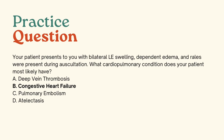C — pulmonary embolism — is incorrect because PE presents with unilateral edema, diaphoresis, and risk factors like surgery, leg injury, and long periods of inactivity. A PE is life-threatening and the patient would need to be sent to the ER immediately. D — atelectasis — is a partial or complete collapse of the lung, presenting with decreased breath sounds, increased fremitus, and tracheal deviation away from the affected lung — none of which match the current patient presentation.